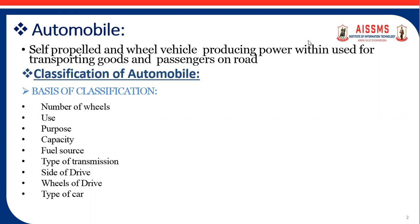Let's talk about the classification of the automobile. There are several parameters on the basis of which automobiles are classified. According to the number of wheels, automobiles are classified into two-wheeler, three-wheeler, four-wheeler, and six-wheeler vehicles.